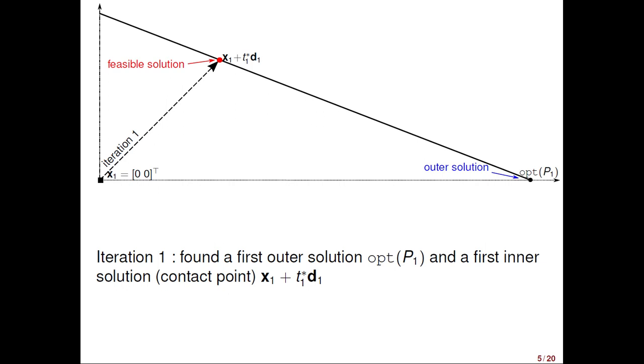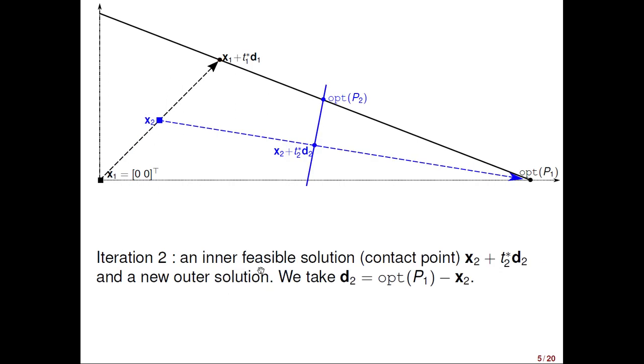What can happen? At the second iteration, we will choose some feasible solution, some certified feasible solution. This needs to be a point lying somewhere between x1 and the red, the small red circle. Well, all this projected segment contains feasible solutions and such a feasible solution will be projected towards the outer solution to see why they are so far away.